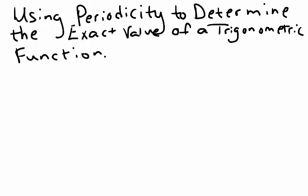Suppose you're asked to find the exact value of cosine of 390 degrees. The period of the cosine function is 360 degrees.